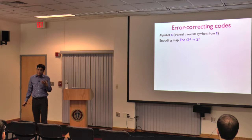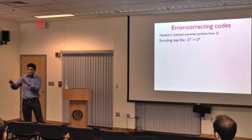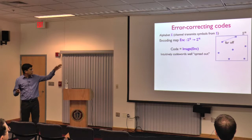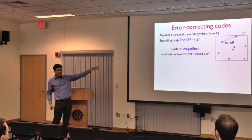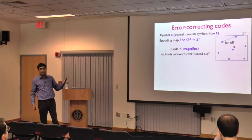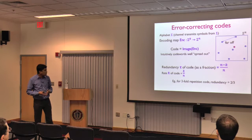Formally, a code gives you a way to take K symbols over some alphabet sigma and encode it into a longer redundant string of N symbols. In the repetition example, sigma was zero-one, K was one — you took one bit and repeated it three times. The pictorial image is that you have sigma to the K codewords sitting in a much bigger space, sparsely populated, so if one gets corrupted it's still closer to the original codeword than anything else. An important parameter is how efficient the code is.